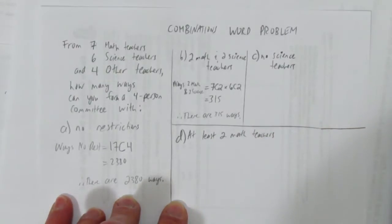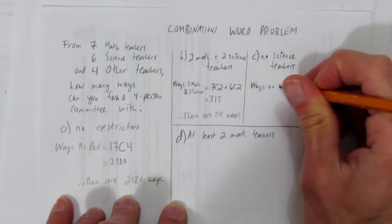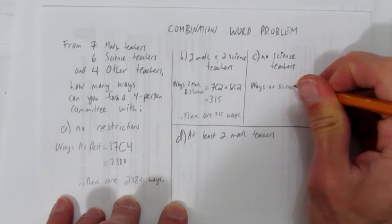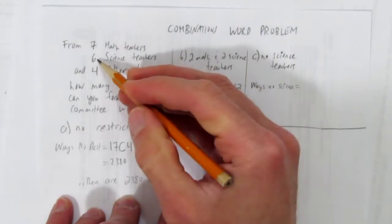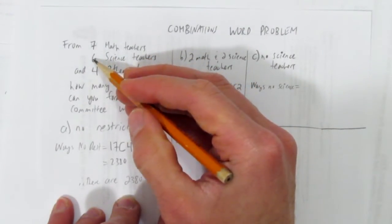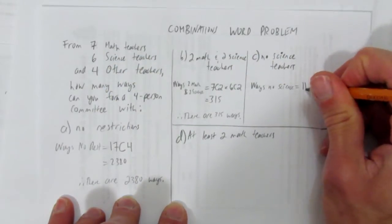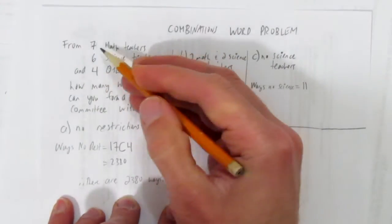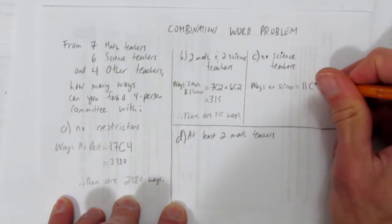What if you were asked to have no science teachers? That's actually not too hard. The ways to have no science teachers, just simply remove the science teachers from the choices. Get rid of this six, and just choose from the seven and four, which is eleven other teachers. Together with the math, there are eleven teachers we can choose from, and we have to choose four.